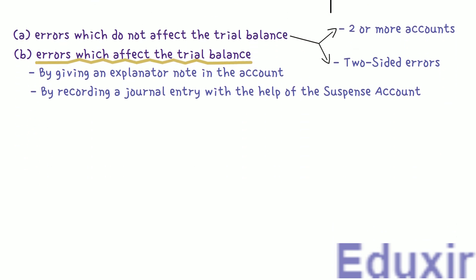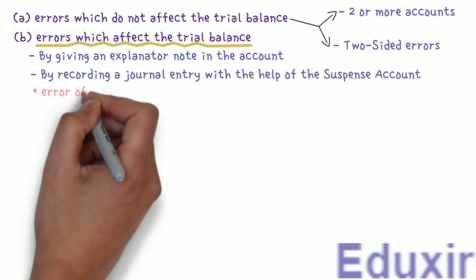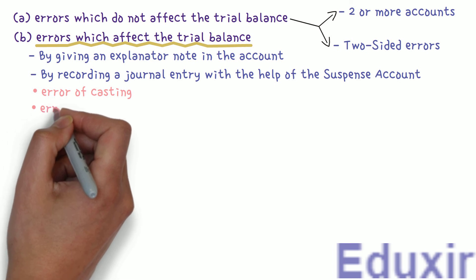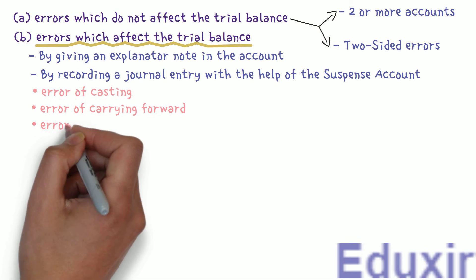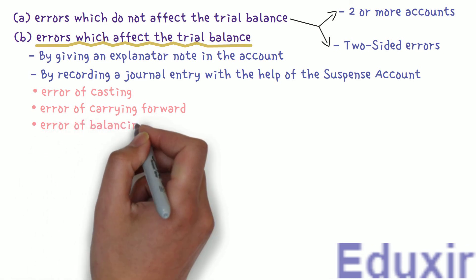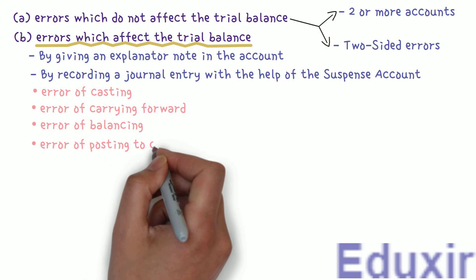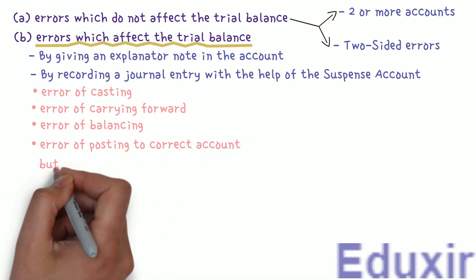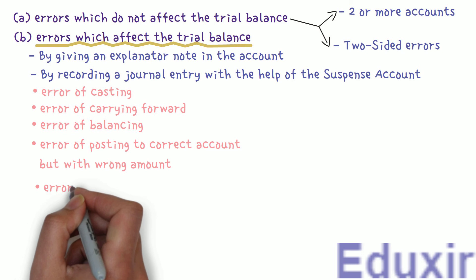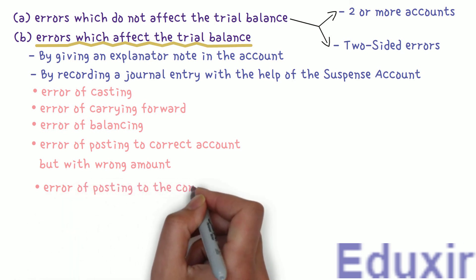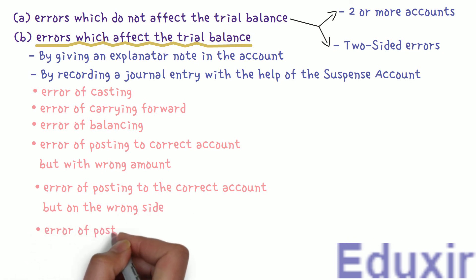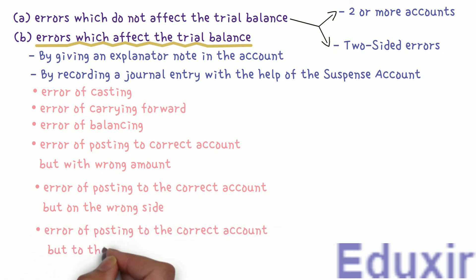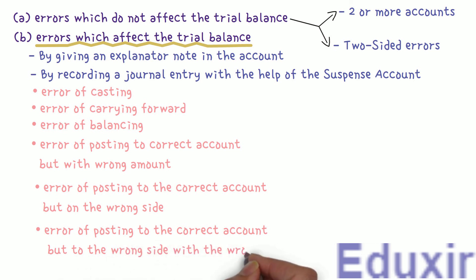Examples of these errors are: error of casting, error of carrying forward, error of balancing, error of posting to the correct account but with wrong amount, error of posting to the correct account but on the wrong side, error of posting to the correct account but to the wrong side with the wrong amount, and omitting to show an account in the trial balance.